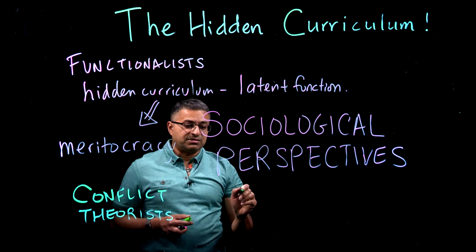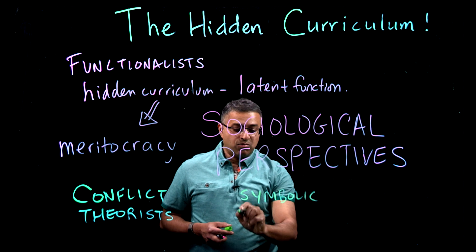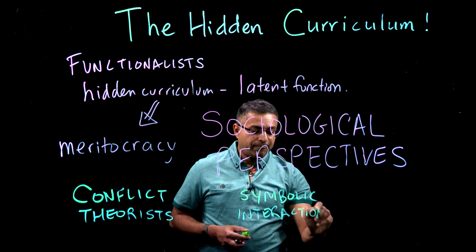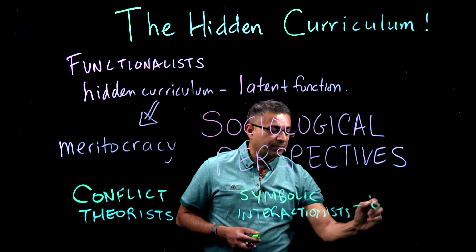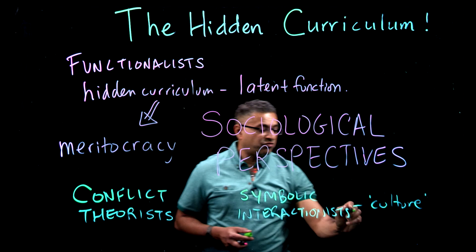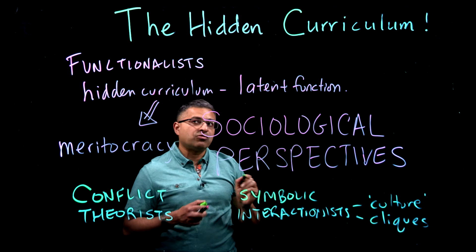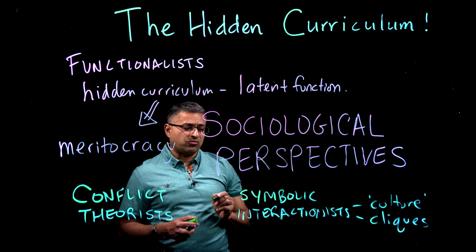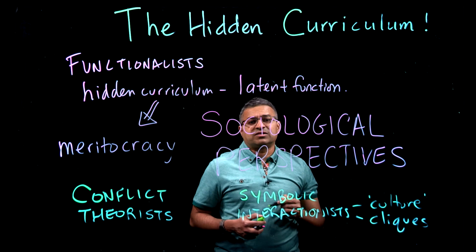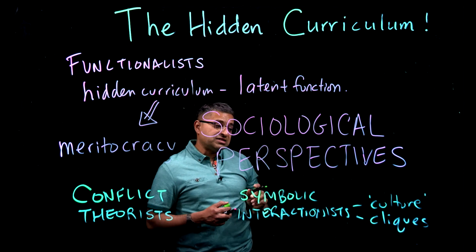Another way to think about it is with the symbolic interactionists, and they look more at the culture of the school and how different groups are there. So if you think about cliques and how they perform different norms or values — it could be the dress code, it could be the lingo or slang the students use, it could be the relationship between teachers and students.